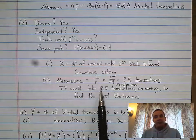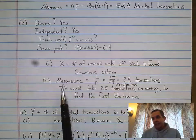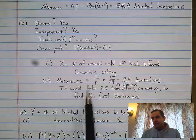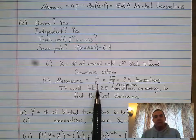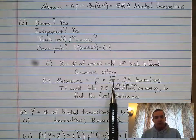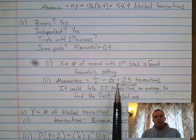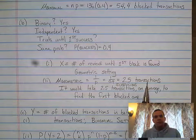Then it asks you to find the average number, again, the mean. On your formula sheet, this formula, mean of geometric equals one over the probability of success. You have to show this, one over 0.4. One over 0.4 is 2.5 transactions.